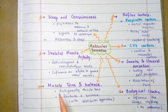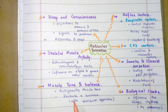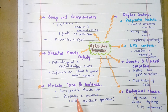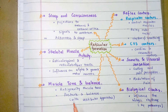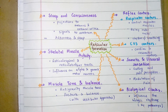Control of Muscle Tone and Balance: Reticular formation has a role in maintaining the balance of the body, posture, and the anti-gravity muscle tone when standing, through the vestibulospinal tract that functions along with the vestibular apparatus of the inner ear.